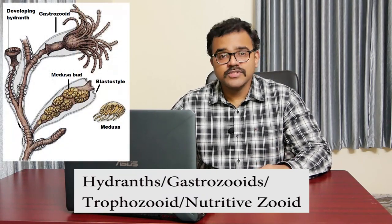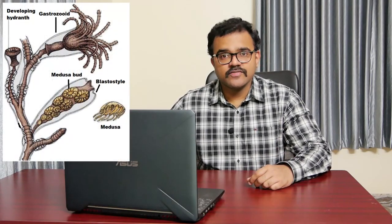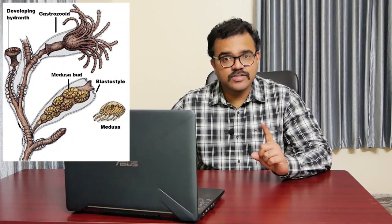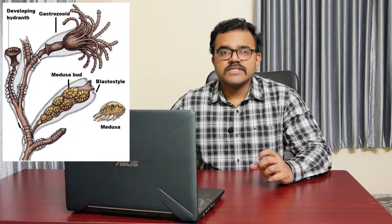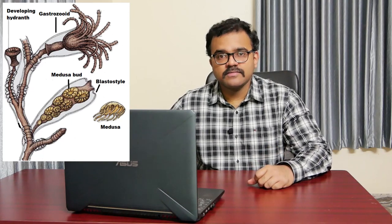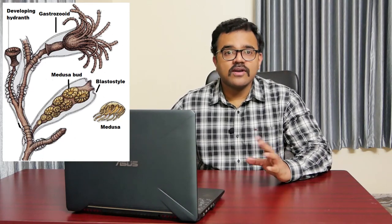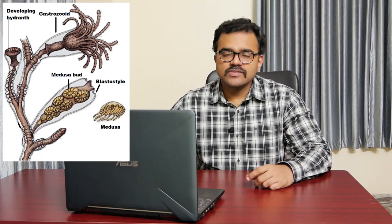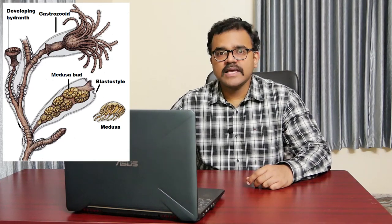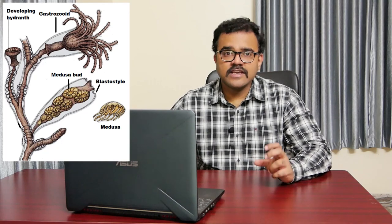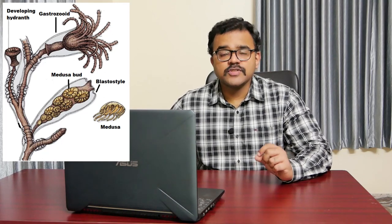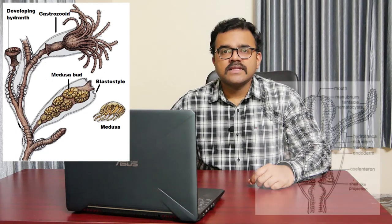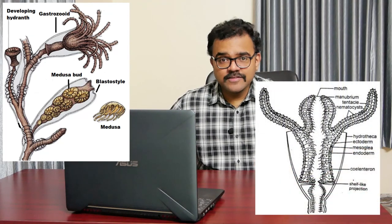Now we move on to the hydranths or gastrozooids, also called trophozooids or the nutritive zooids. Most of the zooids present in the hydroid stage of Obelia are the gastrozooids, specially designed to perform nutritive function and feed the whole colony. Each gastrozooid has a short tube-like body with, at its distal end, a conical projection called the hypostome or manubrium. The mouth is situated at the terminal end of the manubrium.